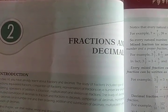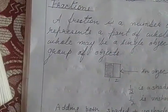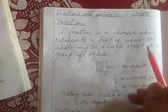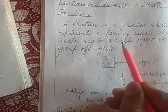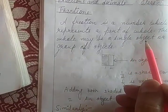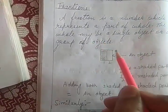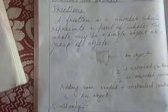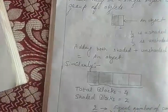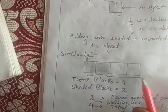The second chapter in your maths is fractions and decimals. A fraction is a number which represents a part of a whole — a part of whole. The whole may be a single object or a group of objects.